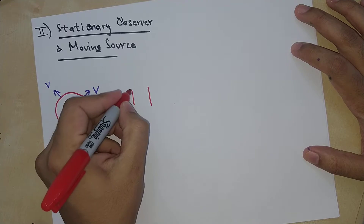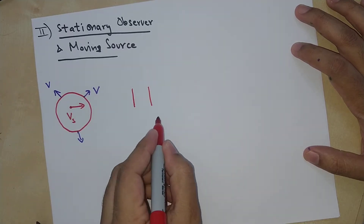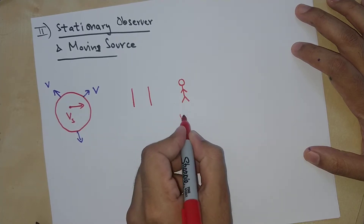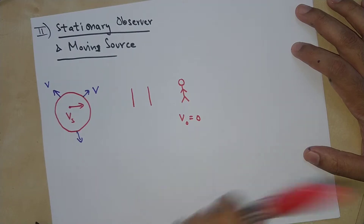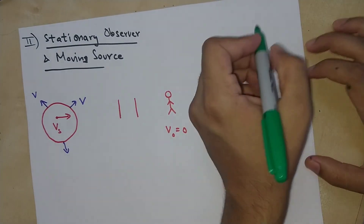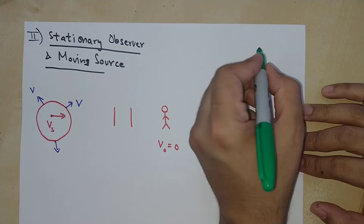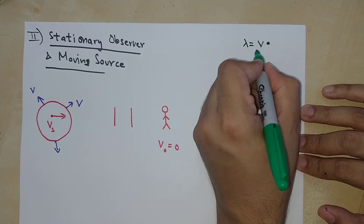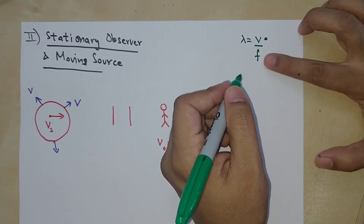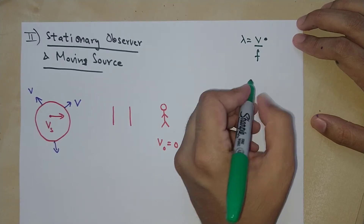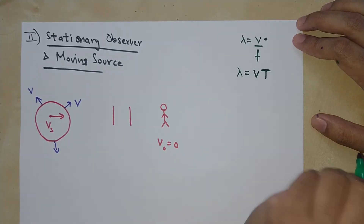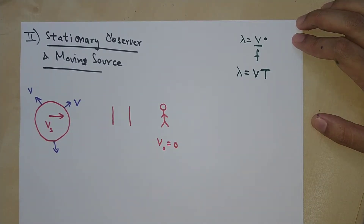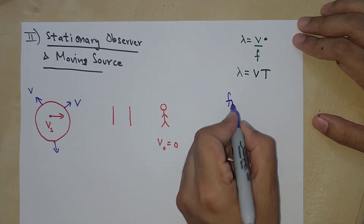Far away from the source, I'm going to draw these crests as parallel lines, and the observer is over here with speed zero. Let me remind you of an equation: lambda equals V over F. And since one over F is capital T, lambda also equals V times capital T.